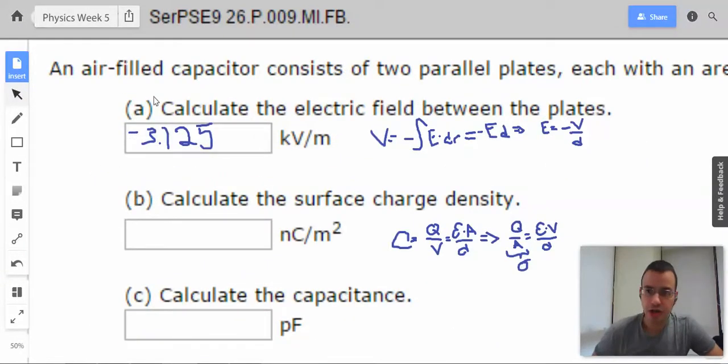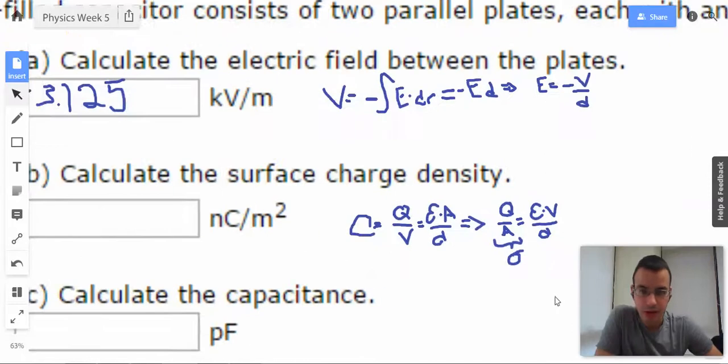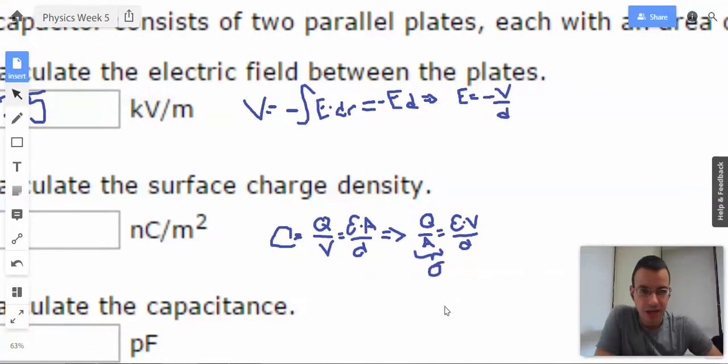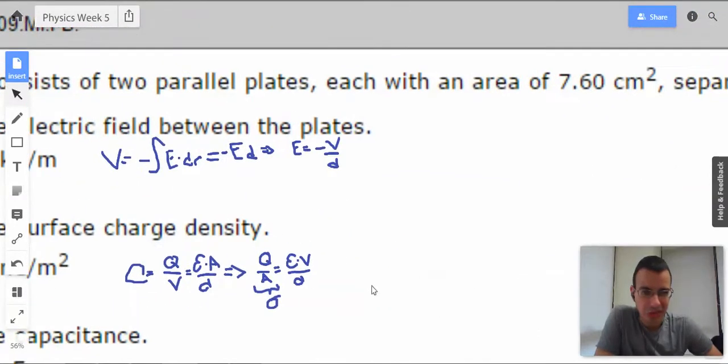This epsilon here is going to be epsilon naught. Since they said air filled, epsilon r for air is about 1. So epsilon equals epsilon naught.